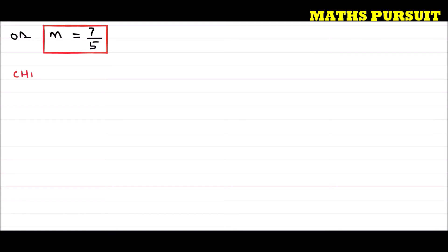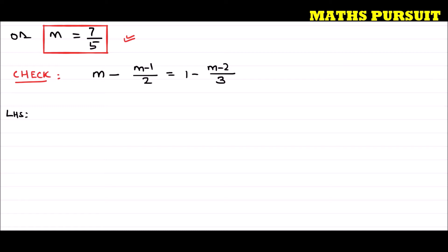Now let us check our answer. We need to verify that the value of m we found is correct. To do that, let us rewrite the original equation: m minus (m minus 1) divided by 2 is equal to 1 minus (m minus 2) divided by 3. We will check the left-hand side and the right-hand side separately and confirm they match.